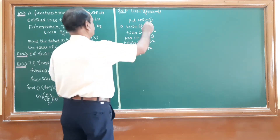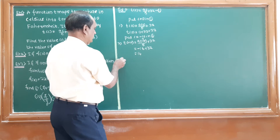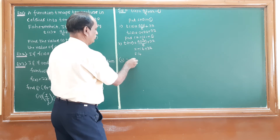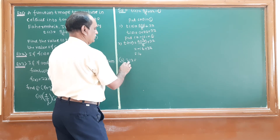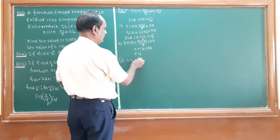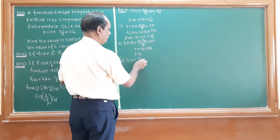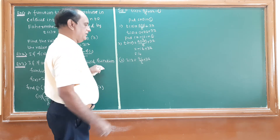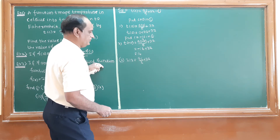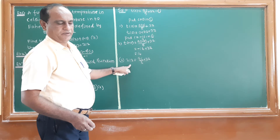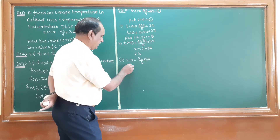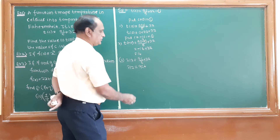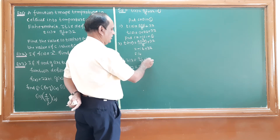For the third case, T(C) = 212 is given. Substituting into the function: 212 = 9C/5 + 32. To simplify, multiply both sides by 5 (taking LCM): 212 × 5 = 9C + 32 × 5, which gives 1060 = 9C + 160.